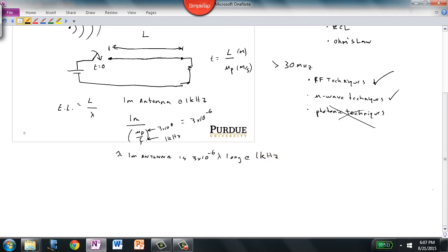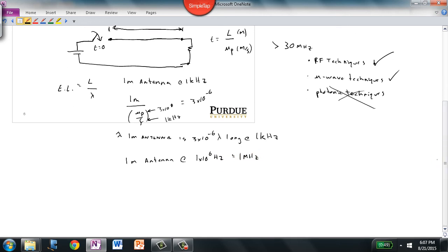Let's repeat that calculation for the same length antenna at a much higher frequency. We'll do a 1-meter antenna at 1 megahertz—1×10^6 hertz. The electrical length is 1 meter divided by (3×10^8 meters per second divided by 1 megahertz). The result is 0.3, so a 1-meter antenna at 1 megahertz is 0.3λ long.